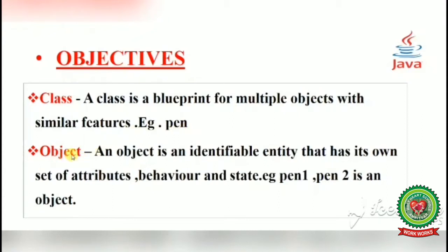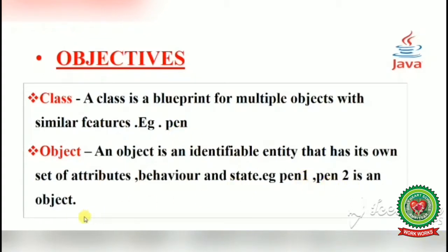What is an object? An object is an identifiable entity — meaning it exists in the real world — that has its own set of attributes, behavior, and state. For example, pen is a class and pen1 and pen2 are objects.